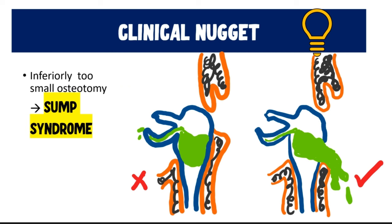Another complication: an insufficiently sized osteotomy inferiorly leads to accumulation of tears in the lower part of the lacrimal sac — this redundant sac portion is called a sump. In this sump, tears accumulate by gravity with no effective drainage into the nasal cavity. This is called sump syndrome. Effective treatment may include surgical revision or utilizing a laser to enlarge the osteotomy in the inferior region.